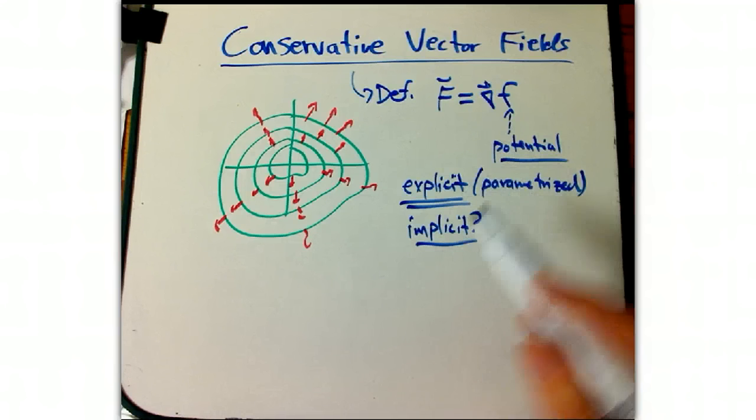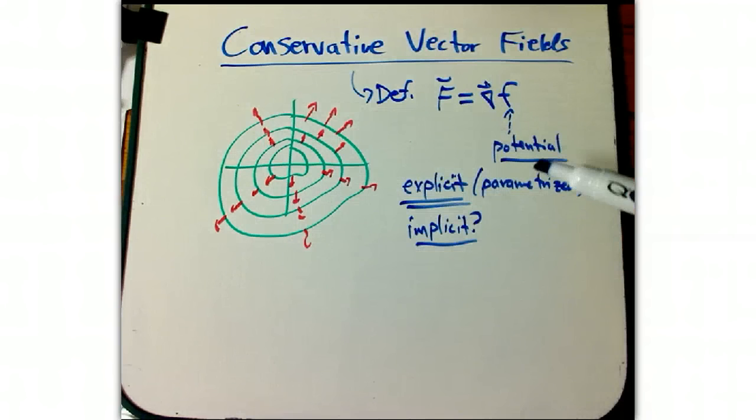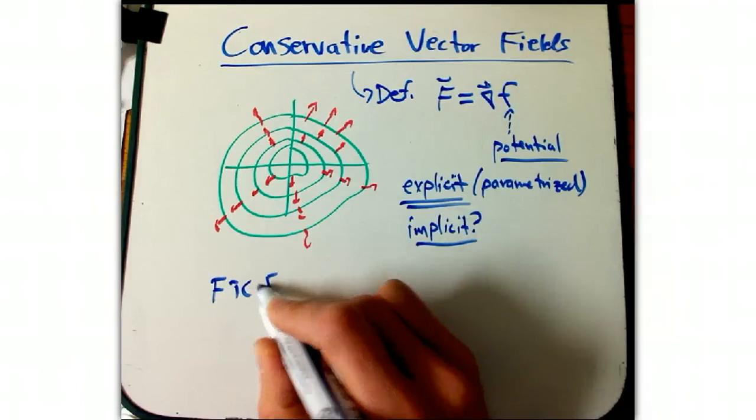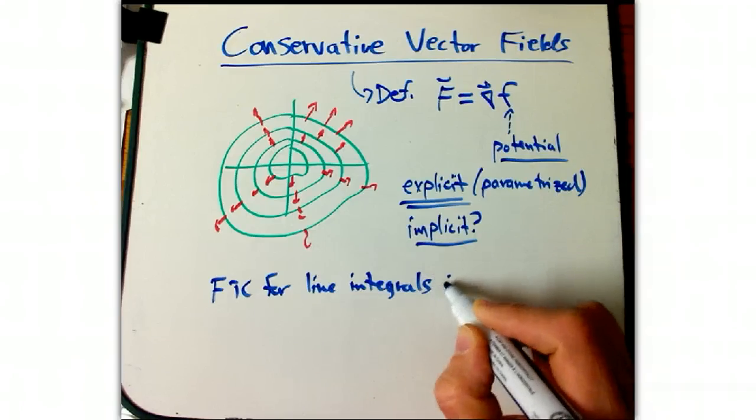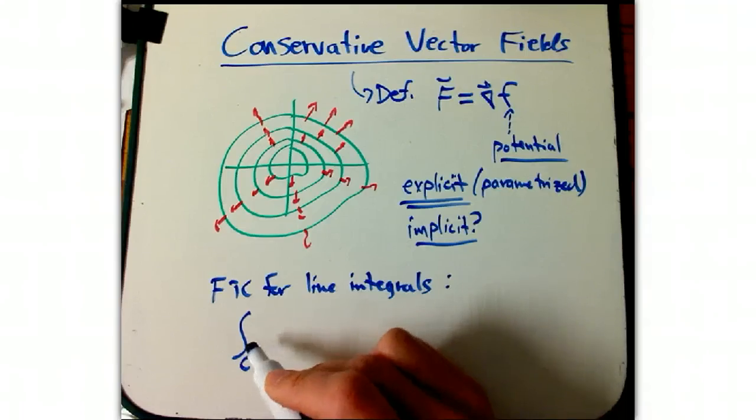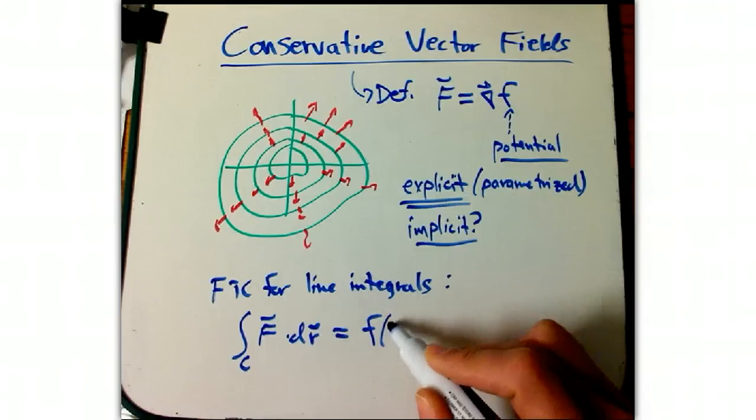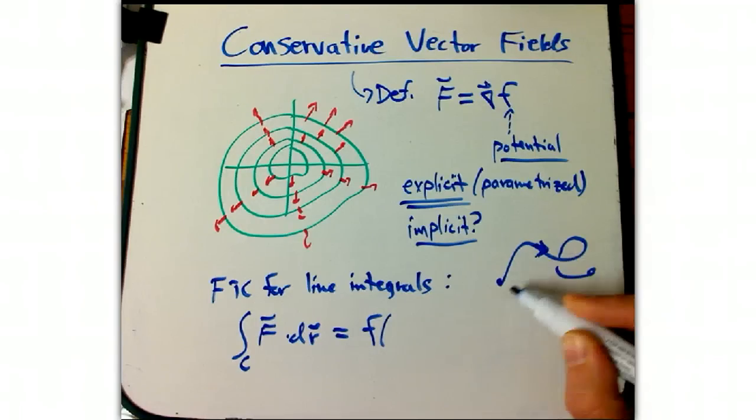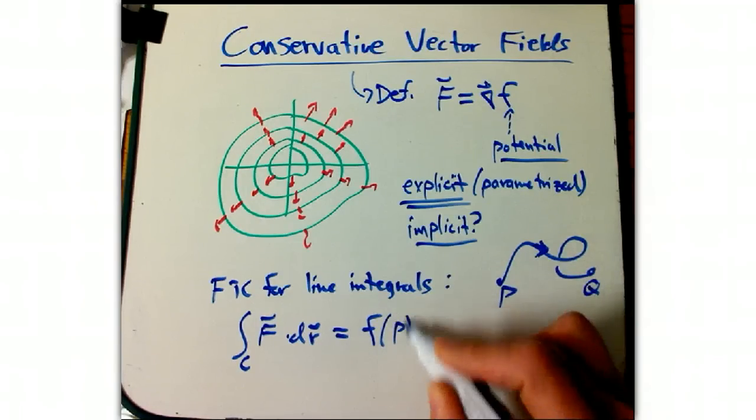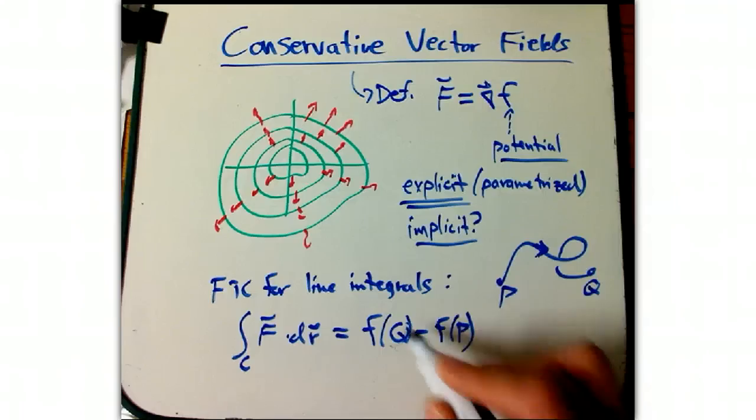So here's an example where I've got the gradient of F. The level curves of F are the green, and then the red arrows are the gradient. That's the vector field F. The first thing to note is that FTC for line integrals automatically applies. This is exactly the kind of vector field to which that applies, and it says that the integral on some curve of F dot dr is just the potential at, let's say this curve goes from P to Q, F of Q minus F of P. That's F of the end minus F of the beginning.